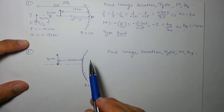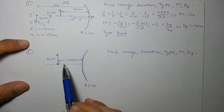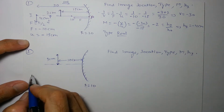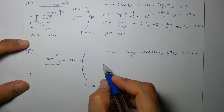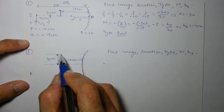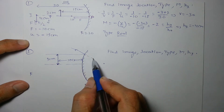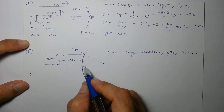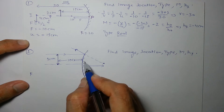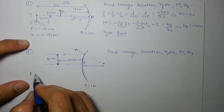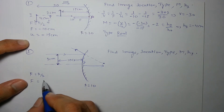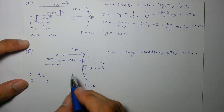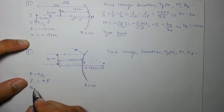Next question: a convex mirror with radius 10 cm, and a 3 cm object placed 10 cm in front. For a convex mirror, parallel rays appear to diverge from a focus behind the mirror. f = R/2 = 5 cm. With sign convention, focal length is +5 cm (behind mirror). Object distance u = −10 cm.